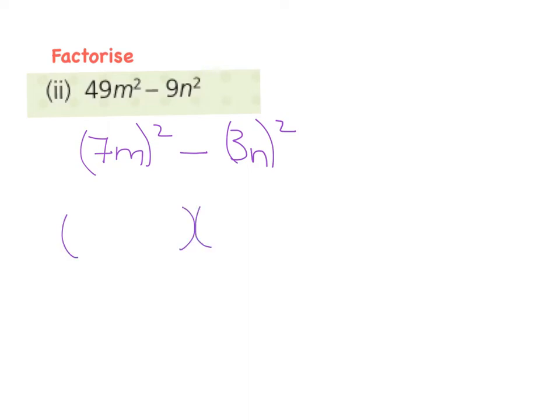Then I lay out my factorization as follows: my two back-to-back brackets, one a plus, one a minus. What by what gives me 49m squared? It is 7m, so 7m by 7m.